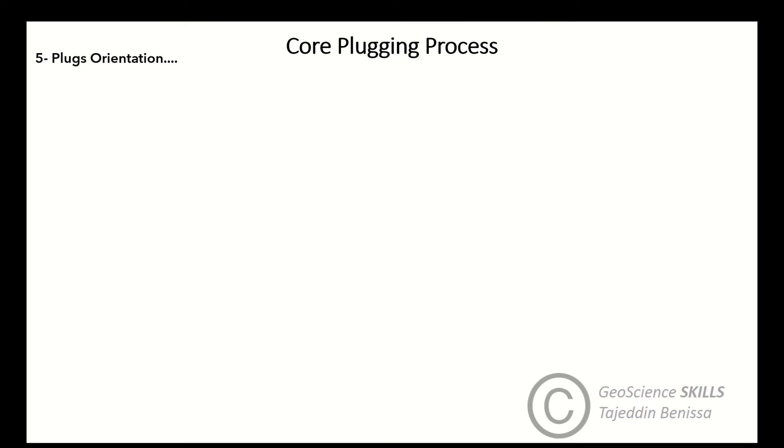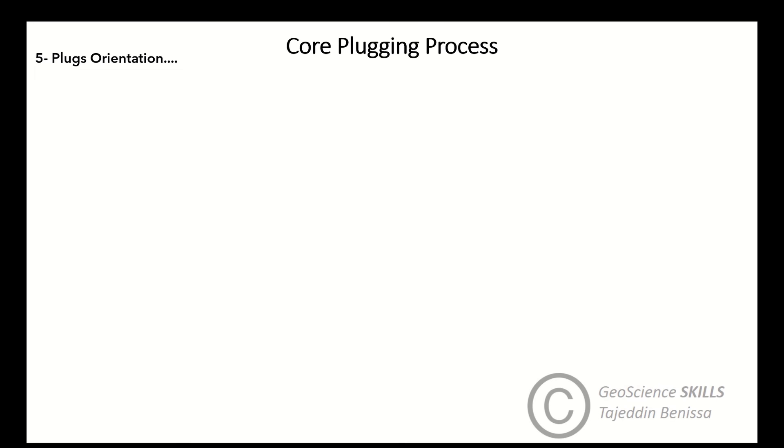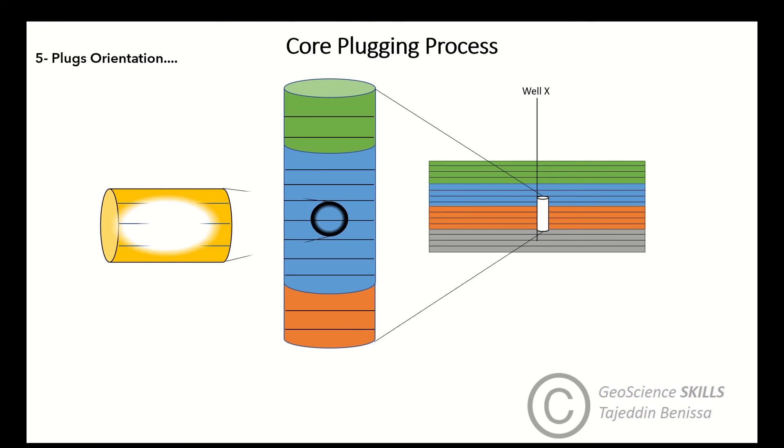Number five: plug orientation. You need to imply the orientation of the plug. It's state of the art that plugs must be cut horizontally, parallel to the apparent bedding plane of reservoir layers. As you can see in this figure, the objective is to sample the maximum permeability in the formation, which is normally parallel to the bedding of the reservoir.